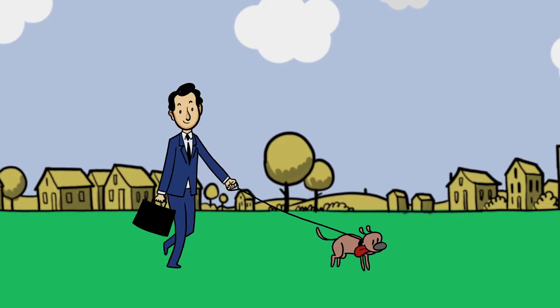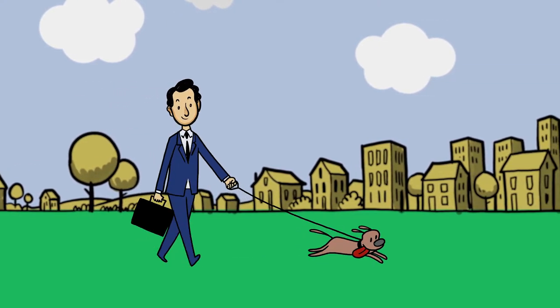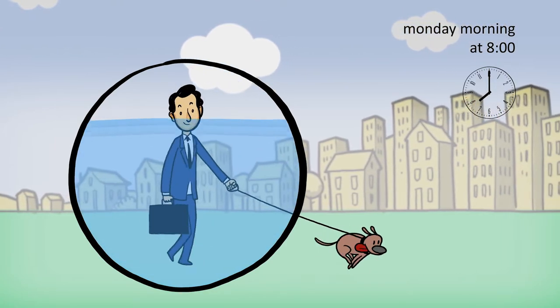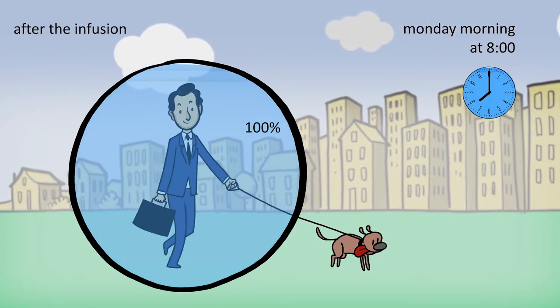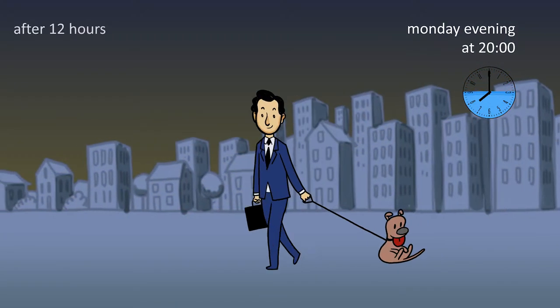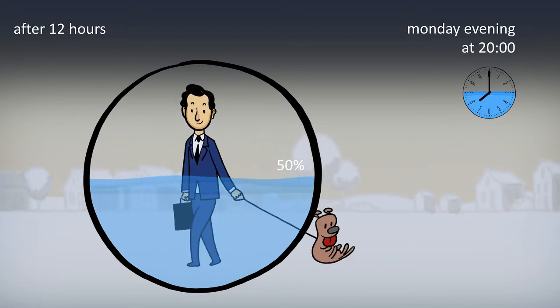For example, let us assume that Ben's coagulation medication has a half-life of 12 hours. He is given an infusion at 8am on Monday morning. The half-life of 12 hours means that 12 hours later, at 8pm in the evening, there is only one half of the quantity of coagulation factor in his body.